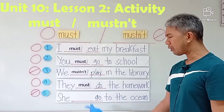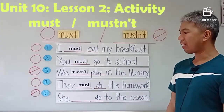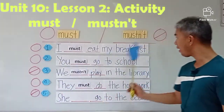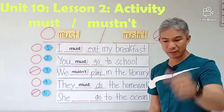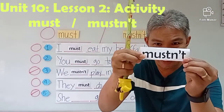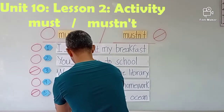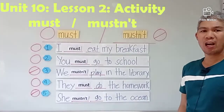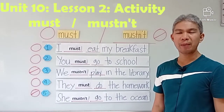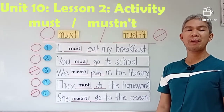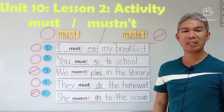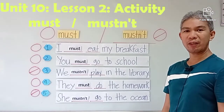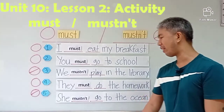Number five — she must or mustn't go to the ocean. Take a look at the symbols. The correct answer is mustn't — she mustn't go to the ocean. Sometimes our mom and dad don't want us to go to the ocean because it's dangerous. Have you been to the ocean?